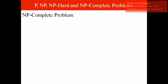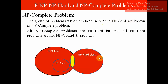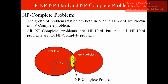NP-complete problems are those that belong to both the NP class and the NP-hard class. Looking at the diagram, NP class and NP-hard problems intersect, and this intersection is called NP-complete. Problems lying in both NP and NP-hard are NP-complete. All NP-complete problems are NP-hard, but not all NP-hard problems are NP-complete — only a few NP-hard problems are also NP-complete.